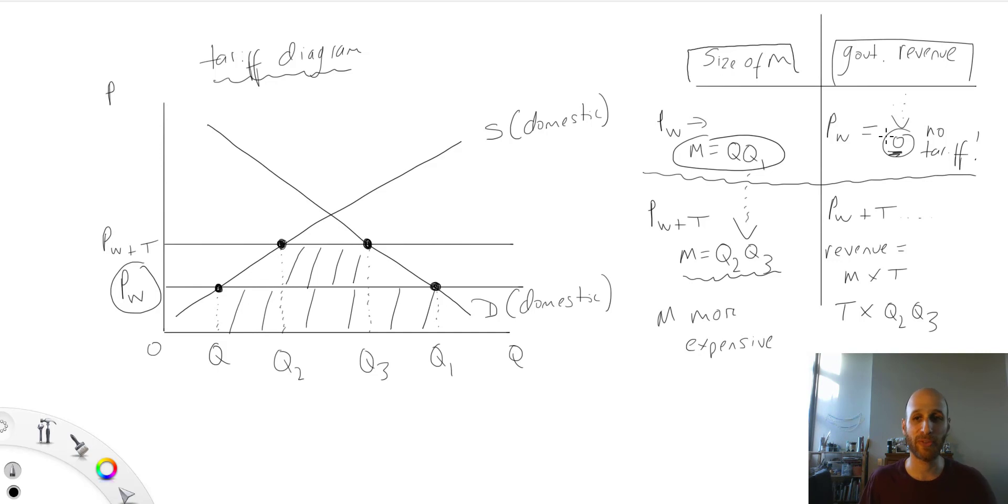And then we need to think about what happens to government revenue. Well, at Pw plus T, government revenue will equal the number of imports times the size of the tariff. So it will equal the size of the tariff, T, times the number of imports at that tariff level, which is equal to Q2, Q3.